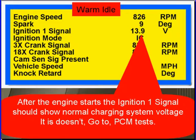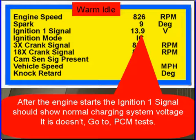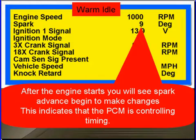After the engine starts, ignition one signal should show normal charging system voltage — if it doesn't, go test the PCM, and don't forget that the charging system has to be good. After the engine starts you'll see spark advance begin to make changes, which indicates that the PCM is in fact controlling timing.